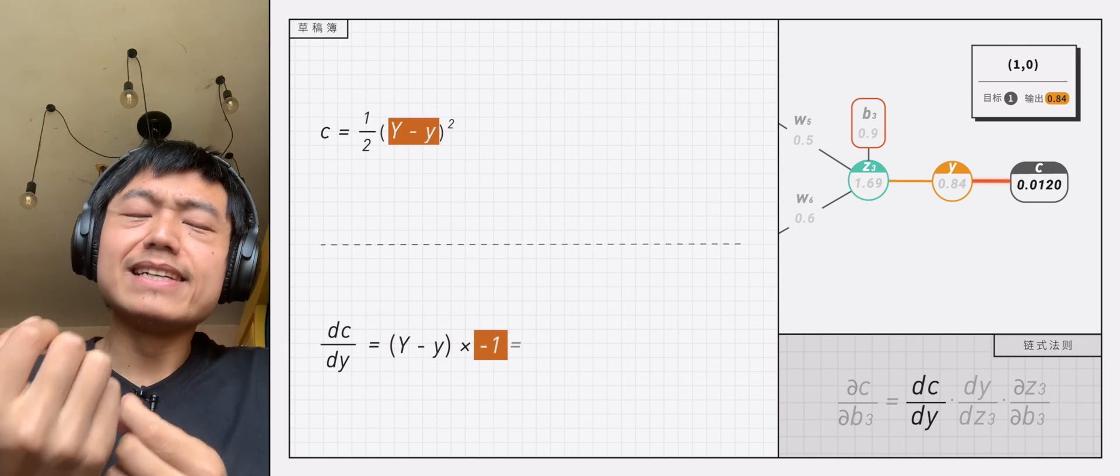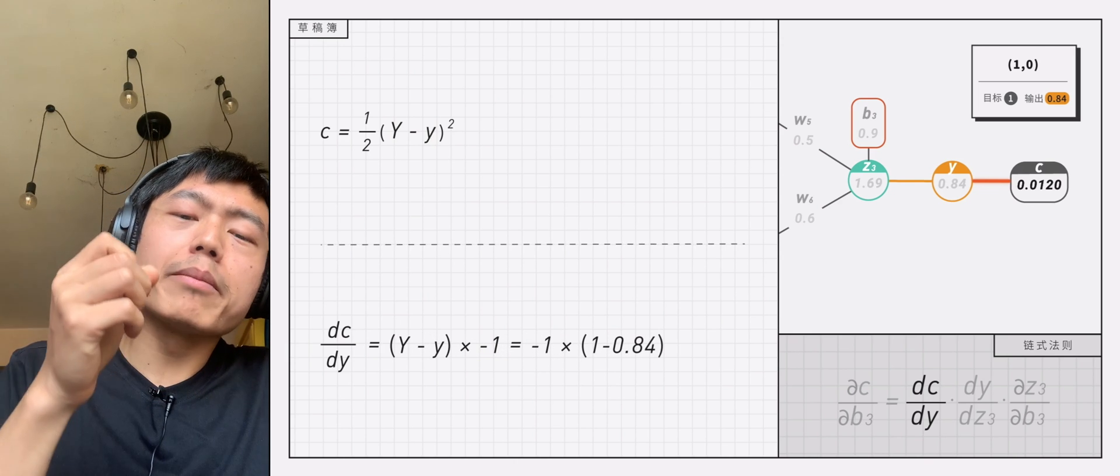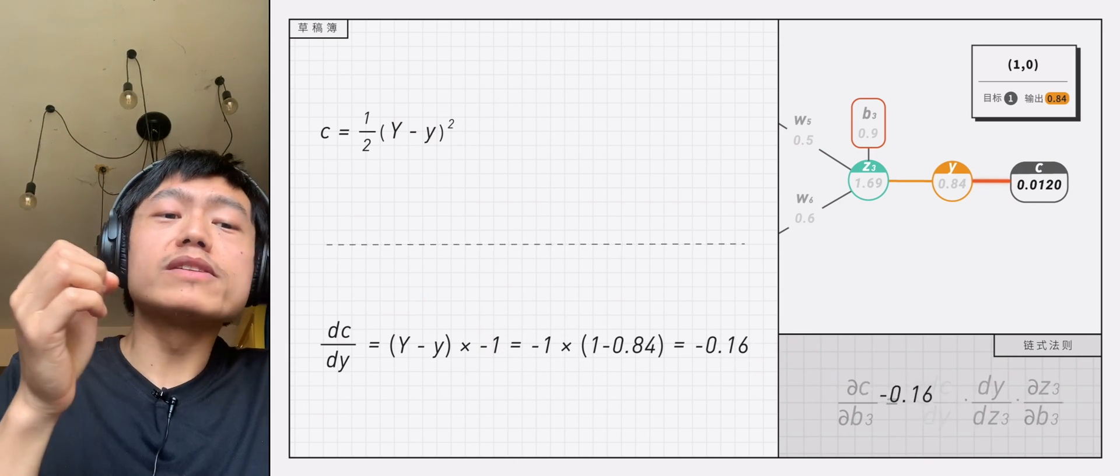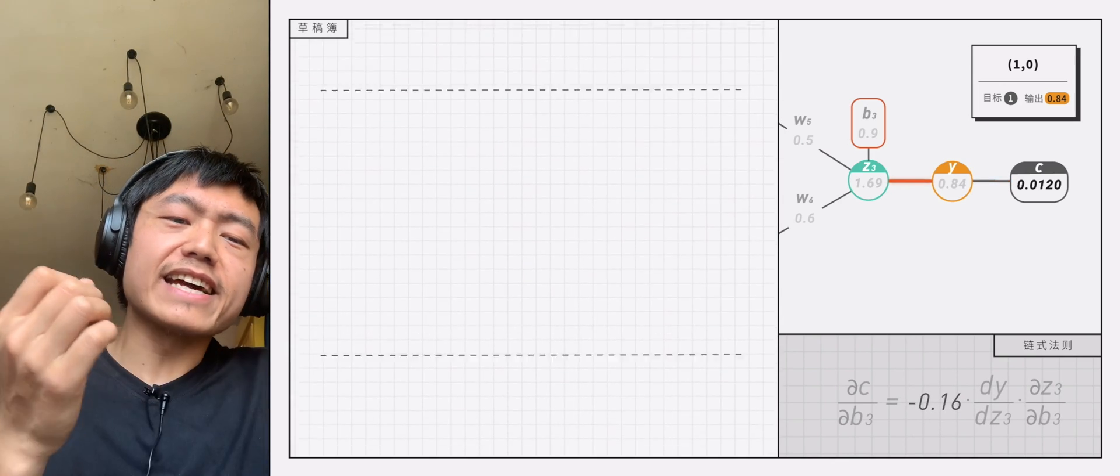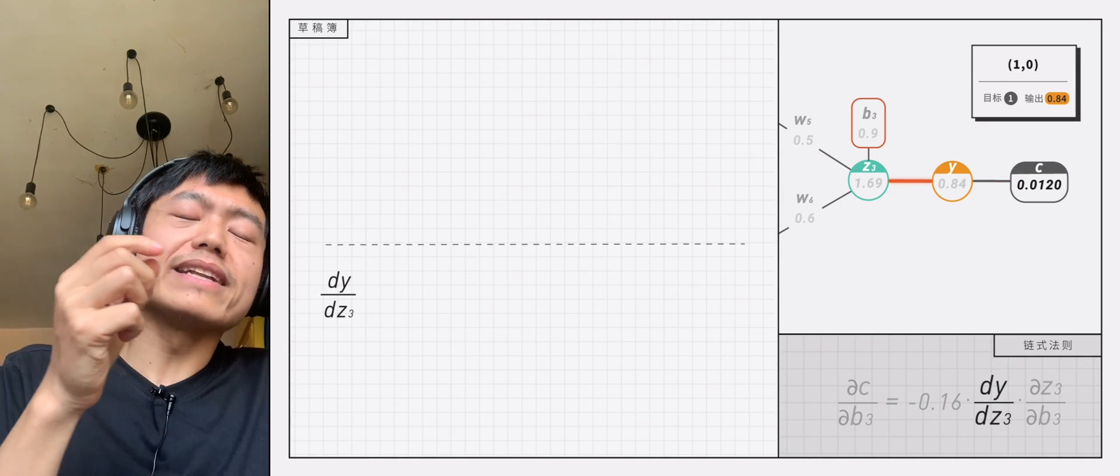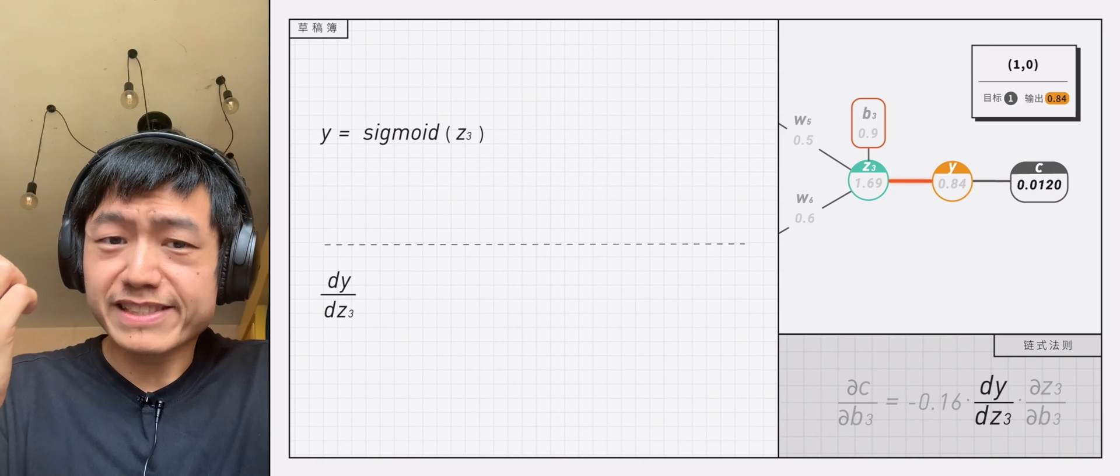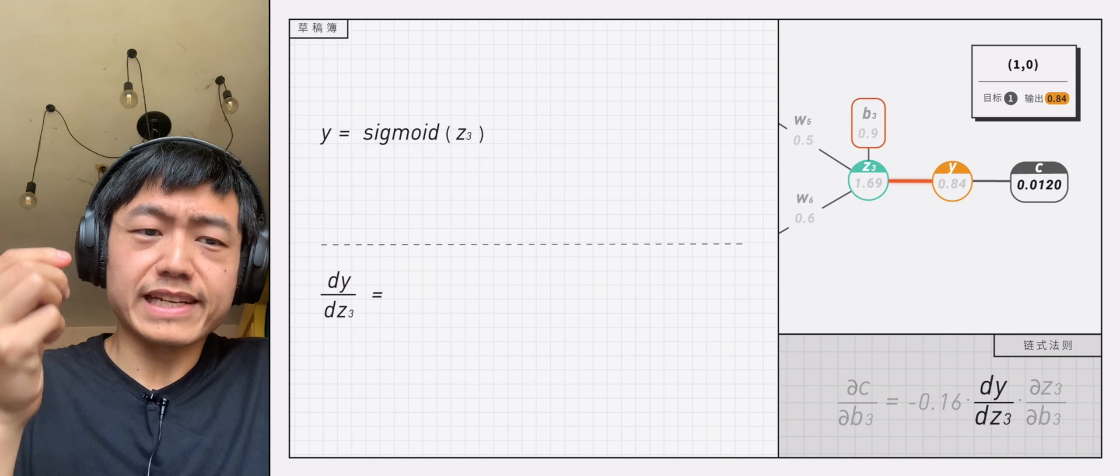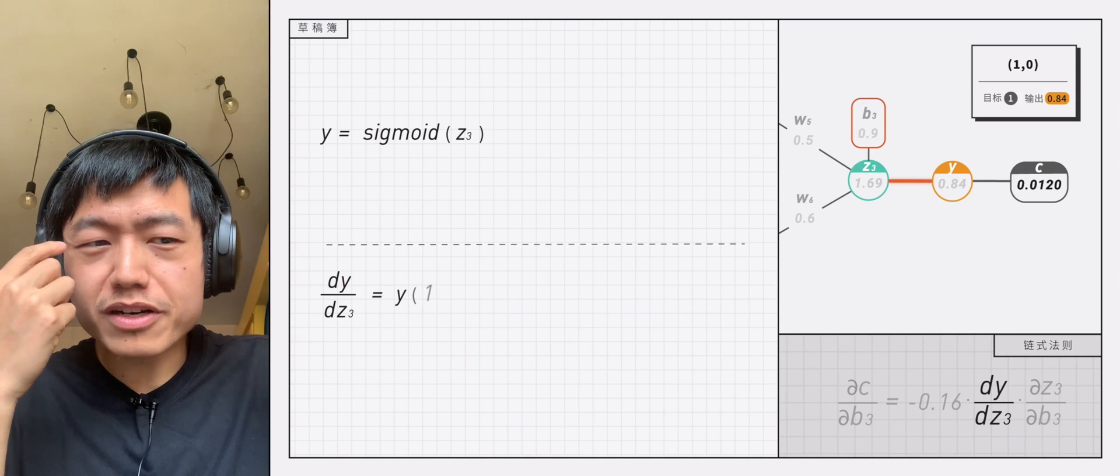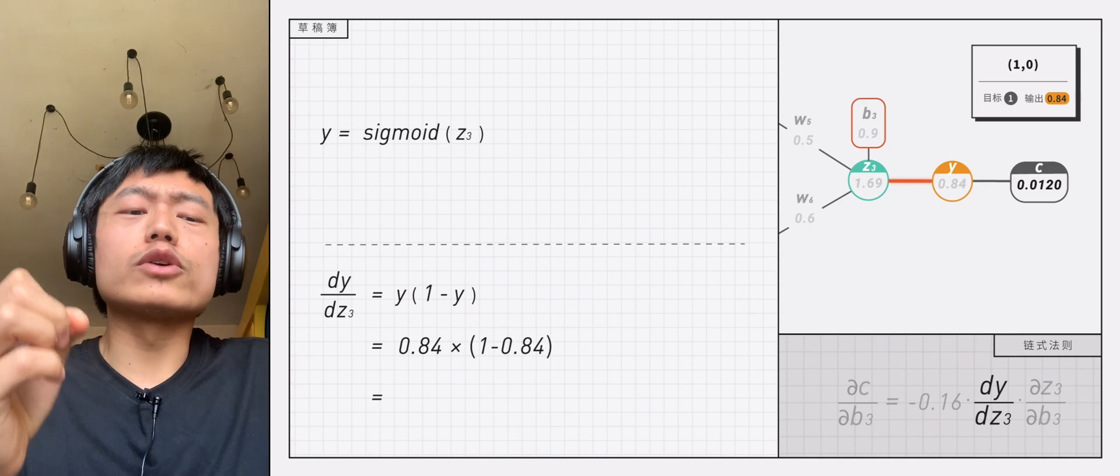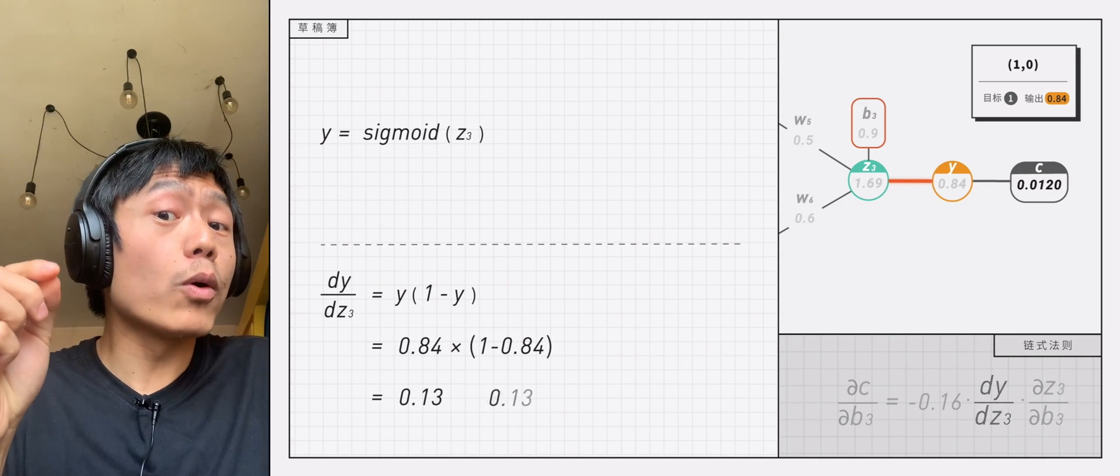The second term, dy divided by dz3, is the derivative of sigmoid. And the derivative of sigmoid is easy to remember, which is y times 1 minus y, which in this case equals 0.13.